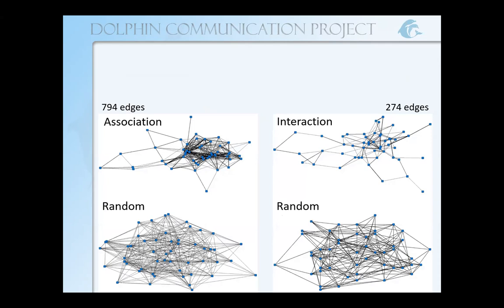Here we're looking at the association and interaction networks I observed on top, and then the associated random networks created below. The random networks have the same number of nodes and edges as the observed network, but the links between them are distributed randomly instead of what we actually observed. A random network has a lot more connections between individual nodes, or the edges are more randomly distributed, making it a more cohesive network overall.